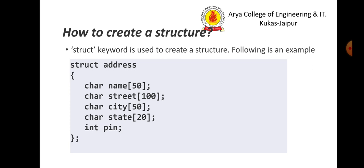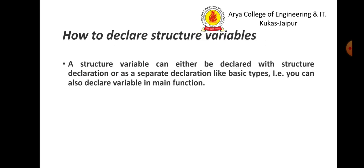Here, the structure address is created, which has five different members with different data types. So, once we create a structure, we have to create a variable also. Variable of a structure is nothing but a simple variable of a struct type.